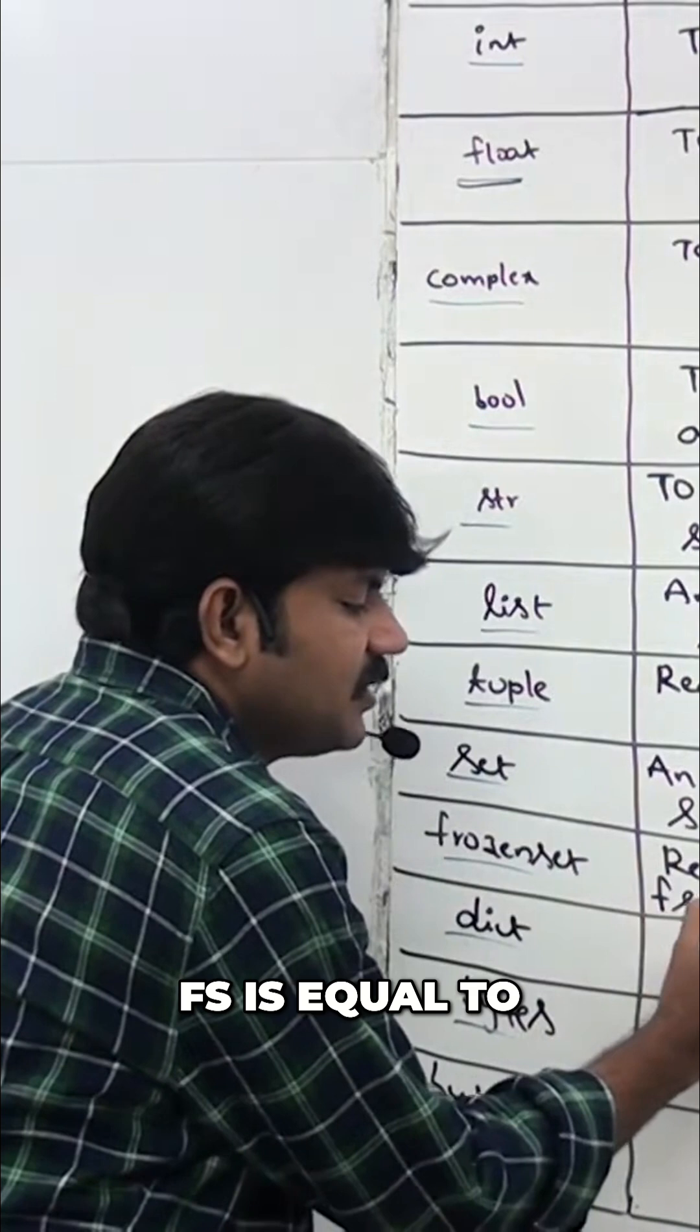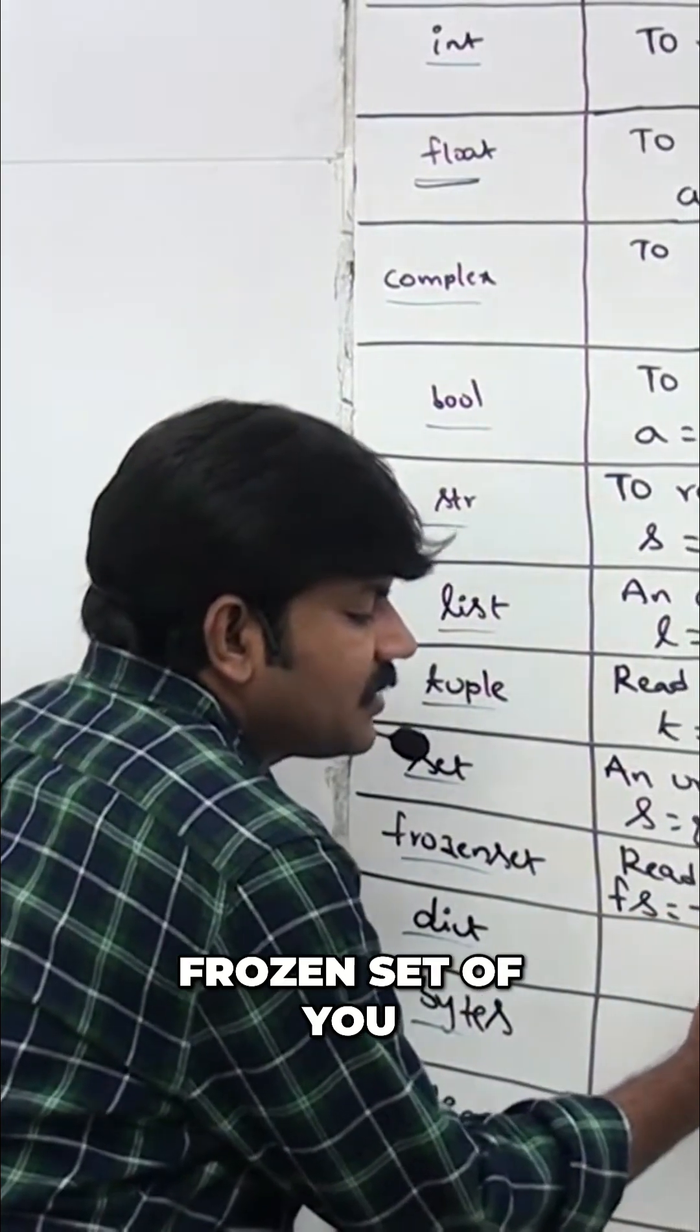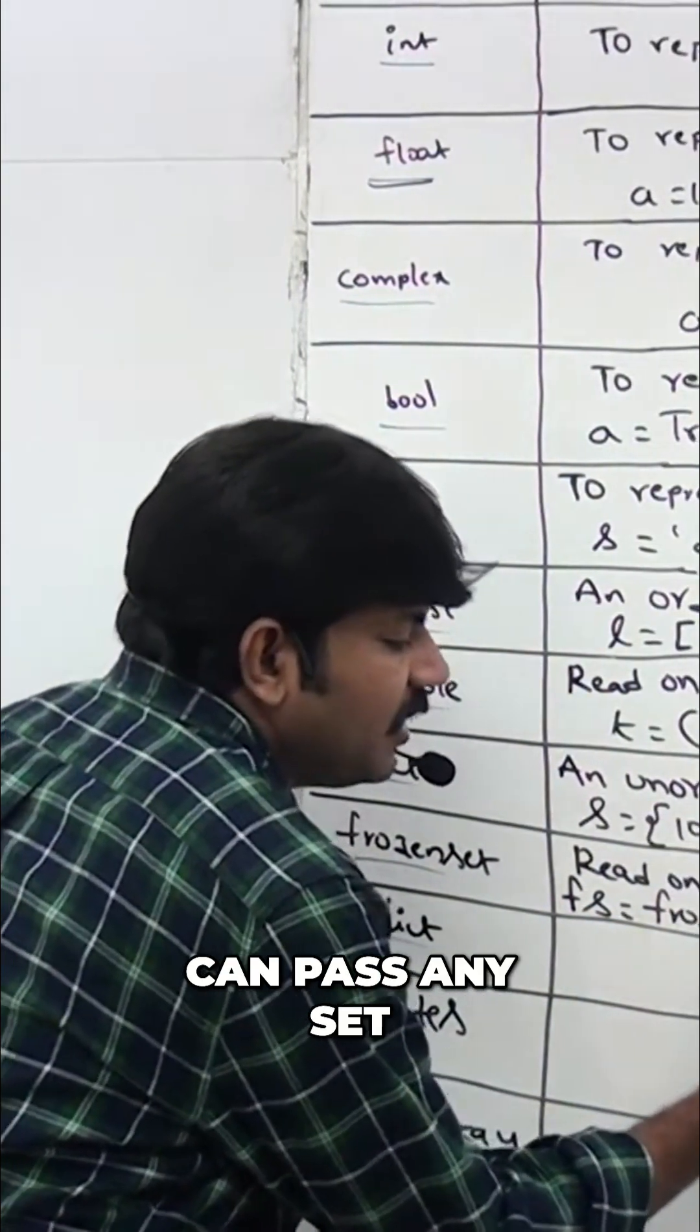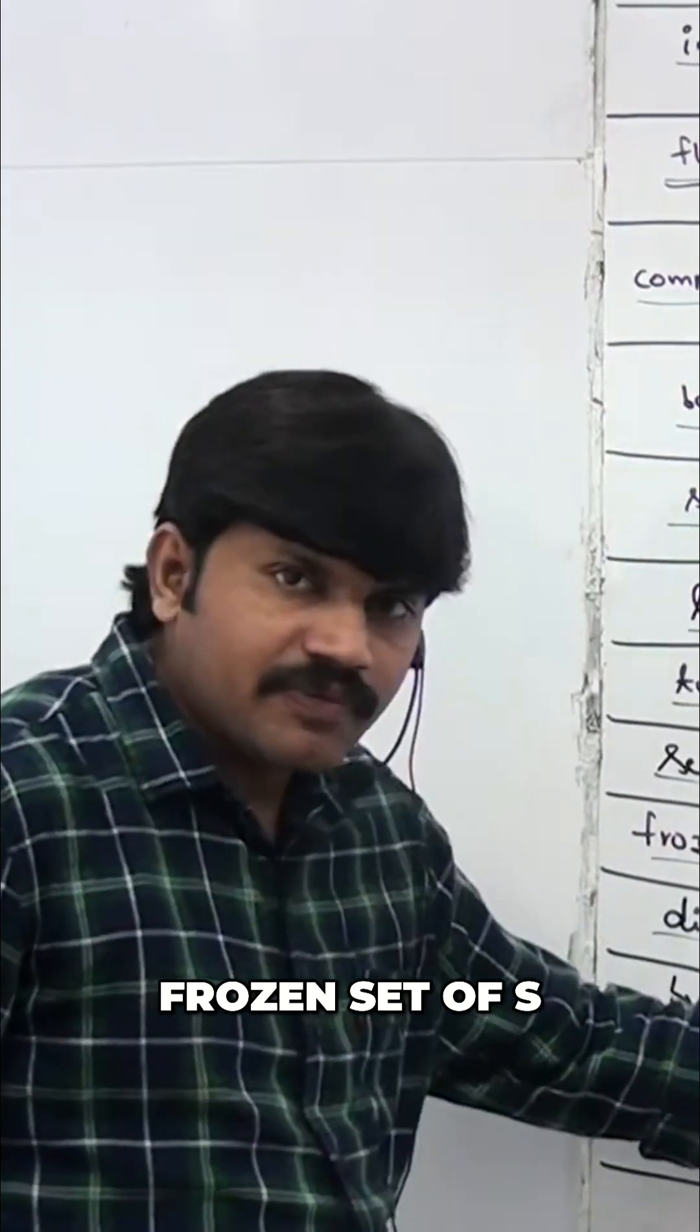How do you get a frozen set? fs equals frozen set of, you can pass any set. Frozen set of, if you pass now, frozen set by default you are going to get.